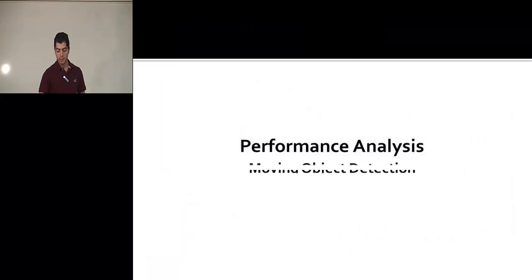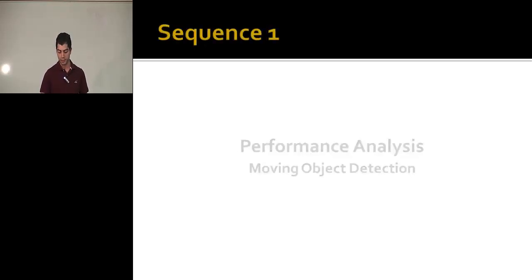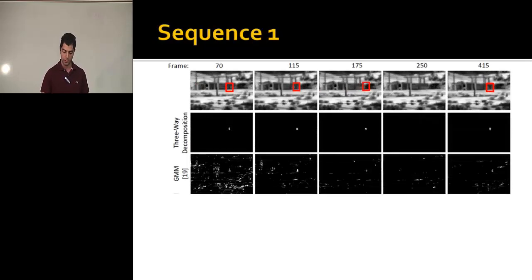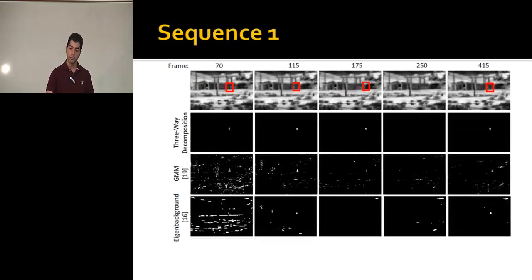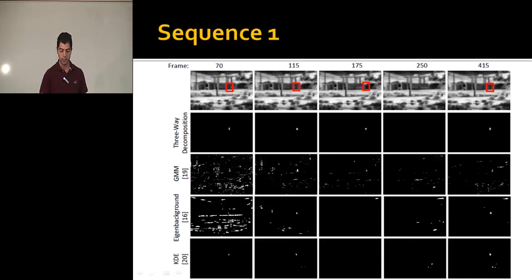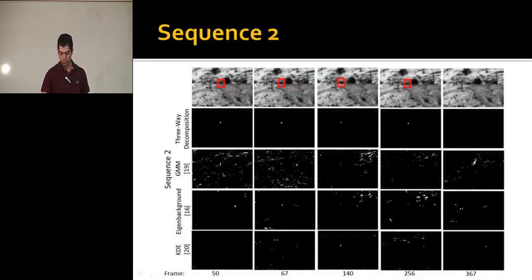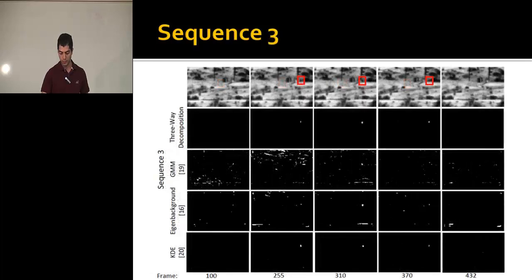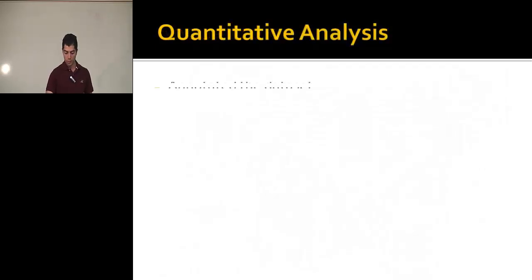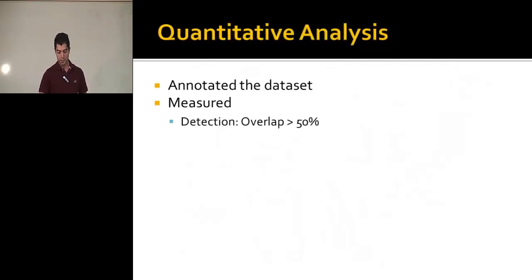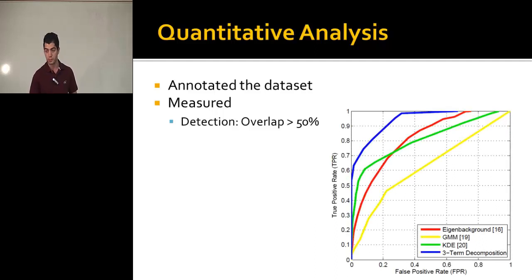We performed separate performance analysis for moving object detection and turbulence mitigation. For moving object detection, qualitatively we compared our method to a Gaussian mixture model, an eigen background model, and a KDE model, and our method shows better results across sequences 2, 3, and 4. Quantitatively, we annotated the dataset and measured detection with over 50% overlap, computing ROC curves. Our method, shown in blue, clearly outperforms the other three methods.